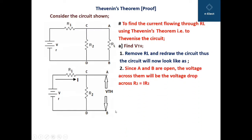Since A and B are open, the voltage across them will be equal to the voltage drop across R2. Current will flow from the positive terminal of the battery through R1, then through R2, and back to the negative terminal. The voltage drop across R2 due to current I is I times R2 according to Ohm's law.